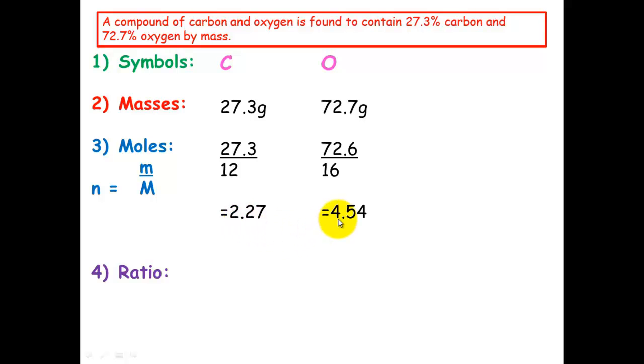So for carbon, 2.27 divided by 2.27 equals 1. For oxygen, 4.54 divided by 2.27 equals 2. So our empirical formula will have one carbon atom and two oxygen atoms. So it's CO2.